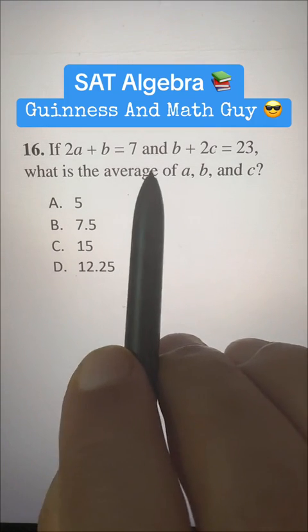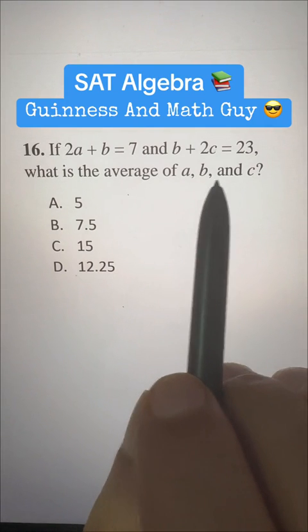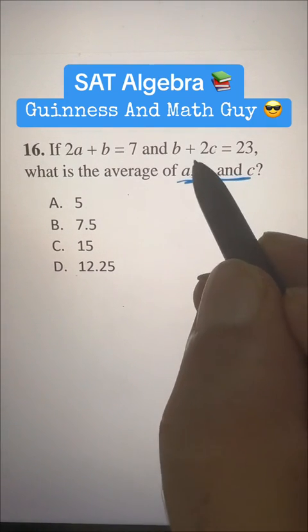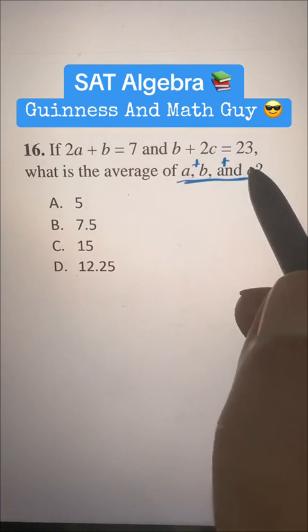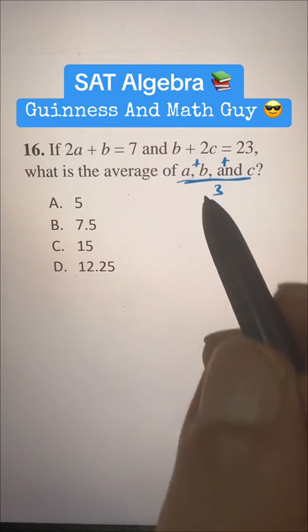If 2A plus B is equal to 7 and B plus 2C is equal to 23, what is the average of A, B, and C? Average of A, B, and C means A plus B plus C whole divided by 3. We need this for the average.